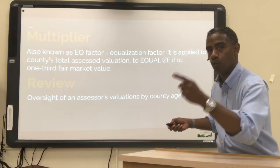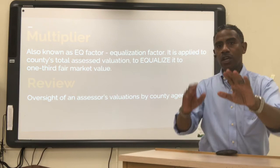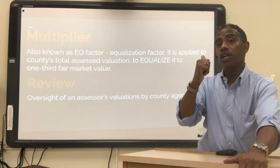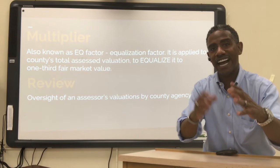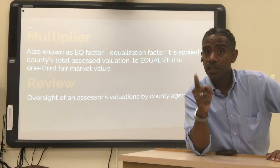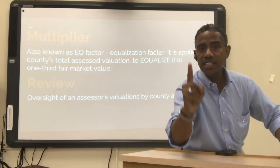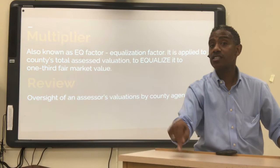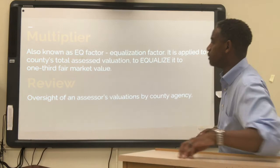You're going to keep seeing one-third fair market value. What does that mean? If I have a $100,000 house, the assessed valuation of one-third is only $33,000. The state knows that with one-third fair market value, if you had to sell a $100,000 house today, you could probably get $33,000 for it today.